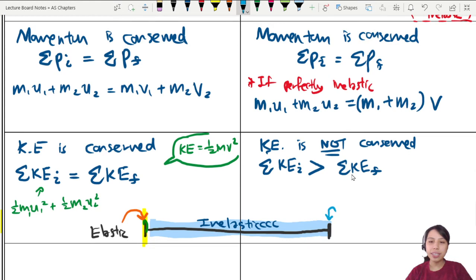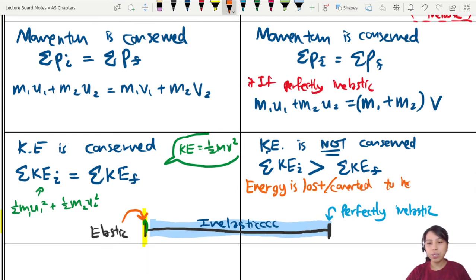Once again, a reminder that perfectly inelastic collision is this spot we call perfectly inelastic. So where has my energy gone? You can say energy is lost or converted to things like heat, to things like sound or deformation of the objects that are being collided.